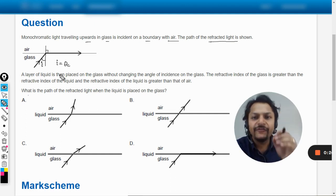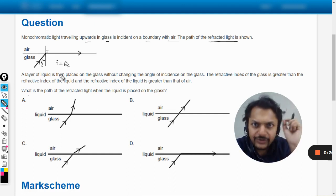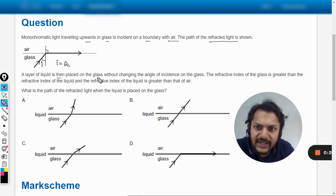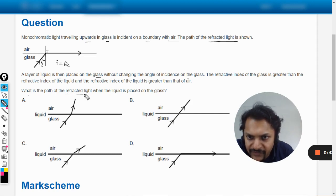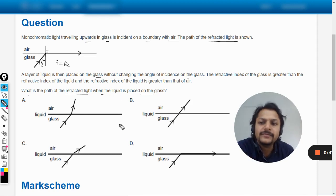For the combination of glass and air, a layer of liquid is then placed on the glass without changing the angle of incidence on the glass. The refractive index of the glass is greater than the refractive index of liquid, and the refractive index of liquid is greater than that of air. What is the path of refracted light when the liquid is placed on the glass?